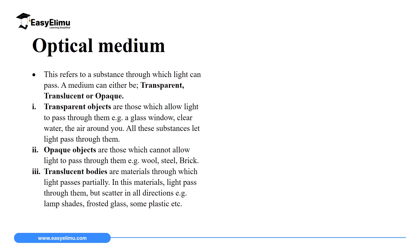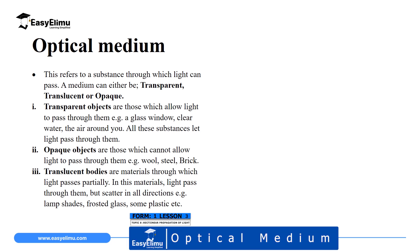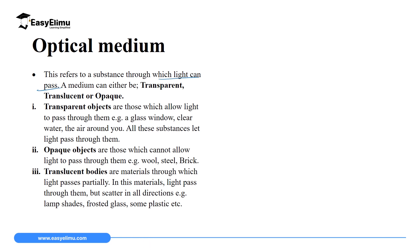So what is an optical medium? An optical medium is any substance through which light can pass. An optical medium can be a solid, a liquid, or a gas. So light can pass through solids, light can pass through liquids, and light can pass through gases. Solids, liquids, and gases are the three main states of matter.